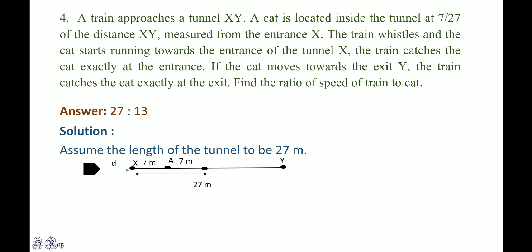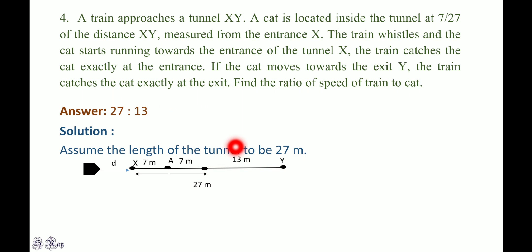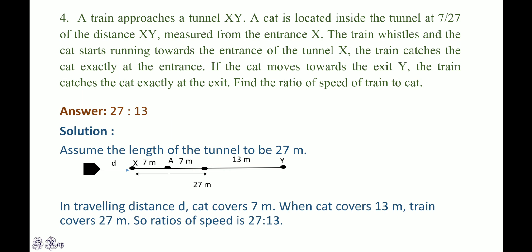The remaining distance for the cat is 13 metres. The train has reached the entrance and needs to travel 27 metres through the tunnel. The cat needs to travel 13 metres to exit Y, and the train catches the cat exactly at Y. Since the ratio of distance equals the ratio of speed when time is constant, the ratio of the train's speed to the cat's speed is 27:13.